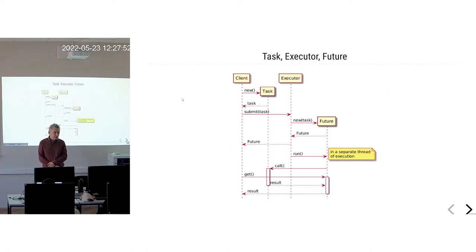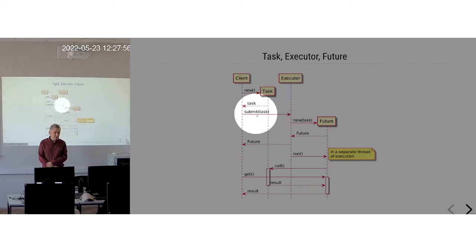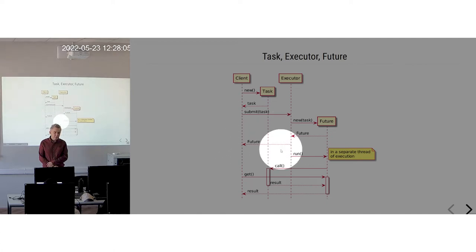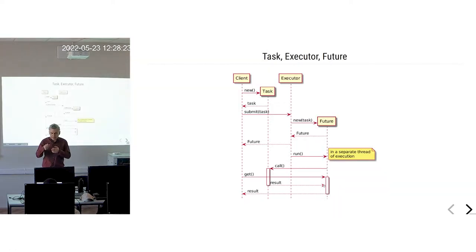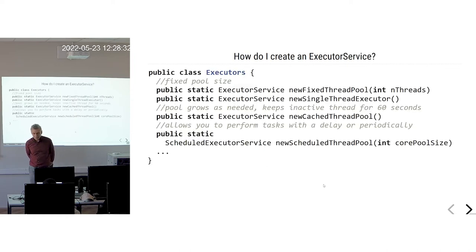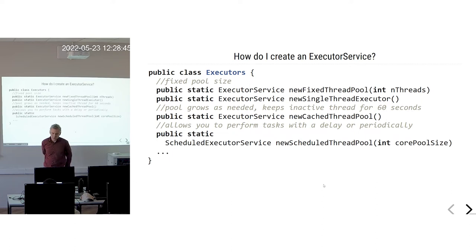Here's how it works: the client creates a task, submits it to the executor. The executor creates a future, which is returned to the client immediately. In parallel, it runs the task in a separate thread, and as soon as the future is completed, its value is assigned. When you call get, you might wait a little while the task is still running, but as soon as it finishes, get returns the result. How do you create an executor service? You implement the Callable interface with whatever code you want executed in parallel, then choose a thread pool variant.